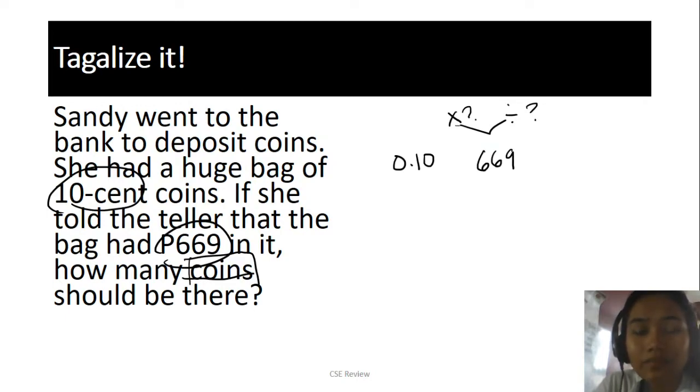What do you need to do? That is the problem—we don't know where to get the equation from. Again, let's just tagalize it. The correct answer here is to divide: 669 divided by 0.10. The next problem is what to do with that. How do I get the answer? What if I don't know how to divide with decimals? The thing is, if you tagalize it, you actually don't need to do this.